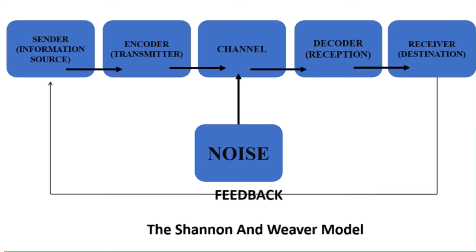The next step in the Shannon-Weaver model is the encoder. The encoder is the machine or person that converts the idea into signals that can be sent from the sender to the receiver. The Shannon-Weaver model was designed originally to explain communication through means such as telephone and computers, which encode our words using codes like binary digits or radio waves. However, the encoder can also be a person that turns an idea into spoken words, written words, or sign language to communicate an idea to someone.